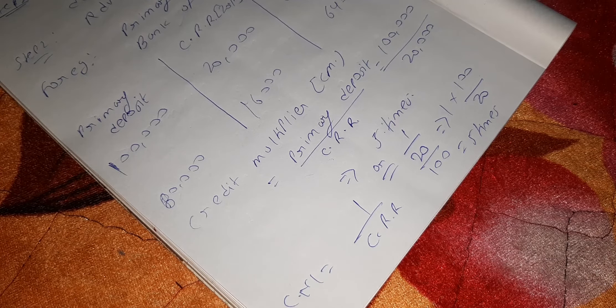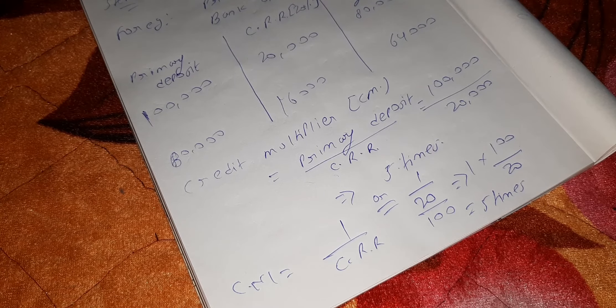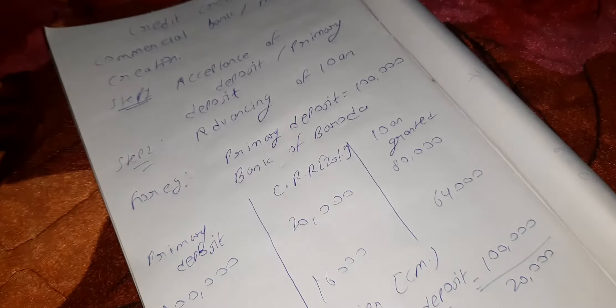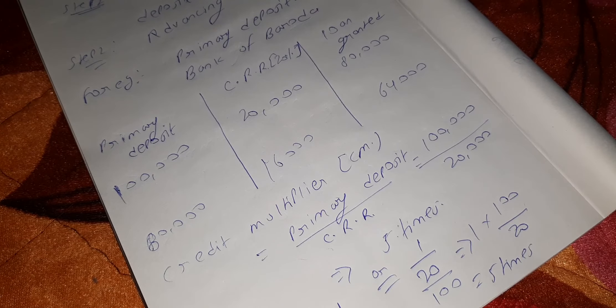You will get a question: 'Explain credit creation with the help of a hypothetical example.' This can come in the exam. You will explain it the same way as shown on this page — I will give you notes for this. Start by writing about credit creation — how commercial bank grants loans to needy borrowers — then the two steps: acceptance of deposit and advancing of loan. Set up a hypothetical example and explain credit creation. This is the most important point of commercial bank.